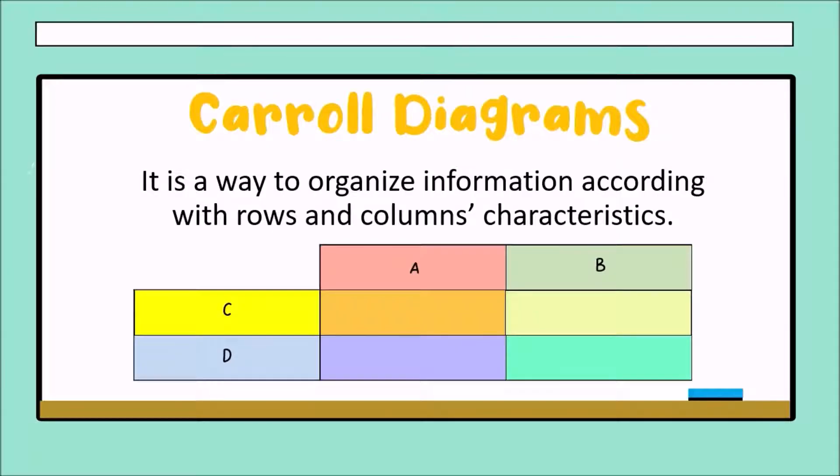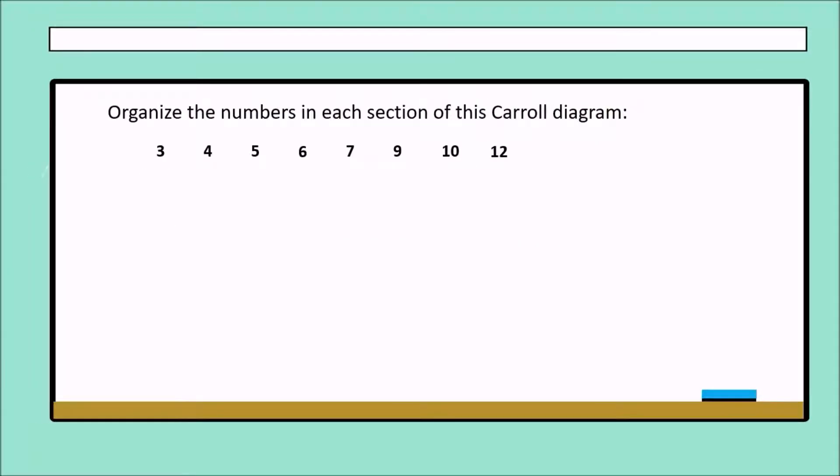Continue with another specific example. Organize the numbers in each section of this Carroll diagram, but we can't organize in any part. We have to organize in a specific section.